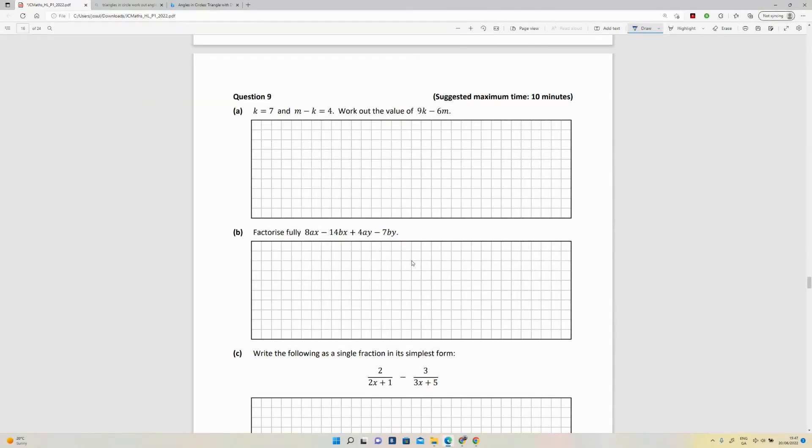Okay, question nine looks like a bit of algebra for us. Part a: k is equal to seven and m minus k is equal to four. Work out the value of nine k minus six m.